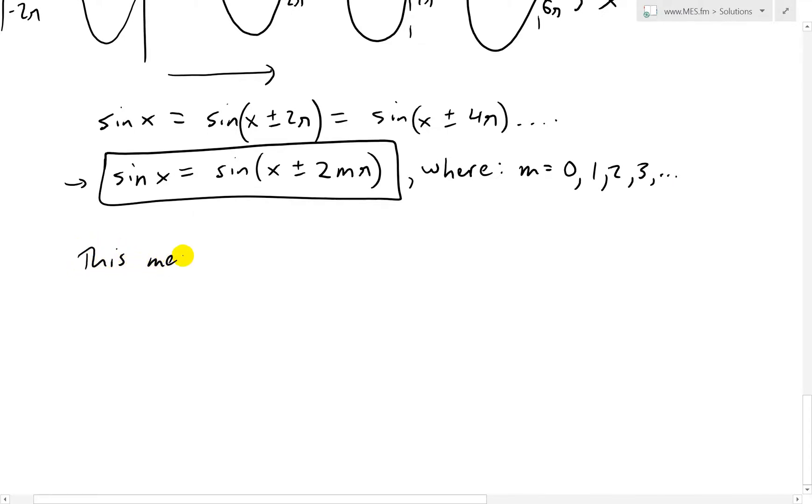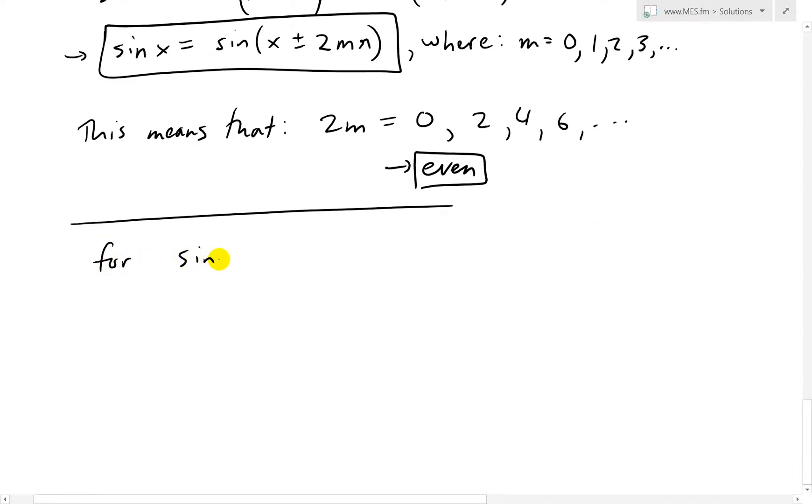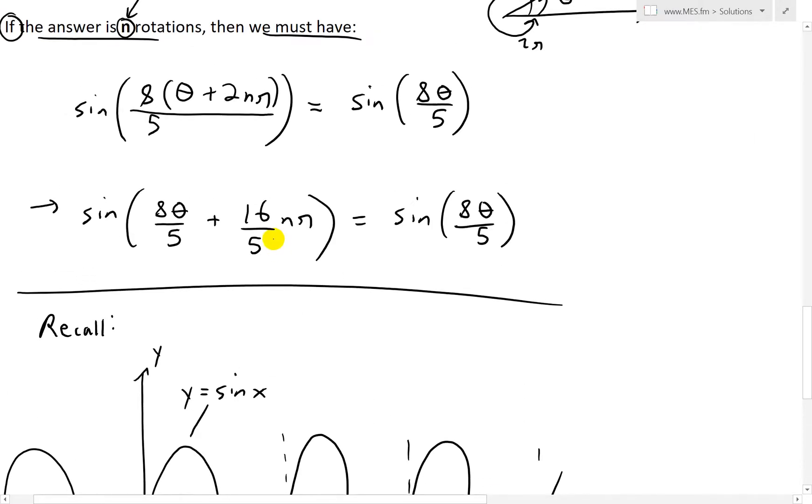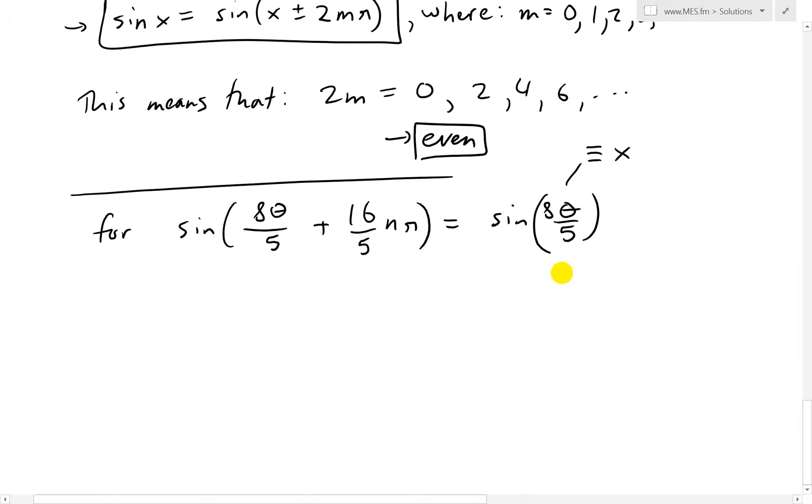So this means that 2m equals, it's going to be 2 times 0 is 0. 2 times 1 is going to be 2. 2 times 2 is 4. And then we have 6. And it keeps going on. This is even. So these are even numbers. So now if we flash back to our curve, for sin(8θ/5 + 16nπ/5), this equals to sin(8θ/5). This is when this becomes even. So this could be considered our equivalent to x. Then basically we're adding this part here. And instead of m, we have n. So then we just look at this part right here. Instead of 2m, we look at 16n/5. It needs to be even.